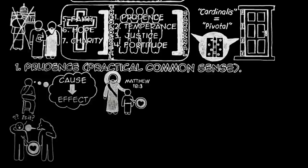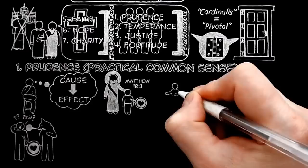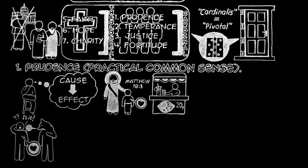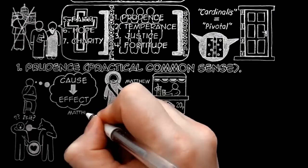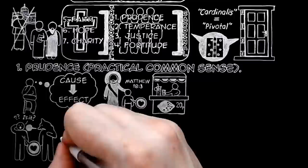In the first place, most children show plenty of prudence about doing the things they are really interested in and think them out quite sensibly. In the second place, as St. Paul points out, Christ never meant that we were to remain children in intelligence. On the contrary, he told us to be not only as harmless as doves, but also as wise as serpents.